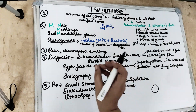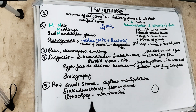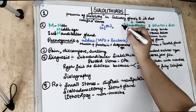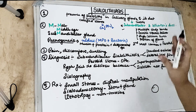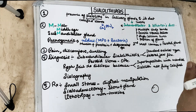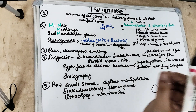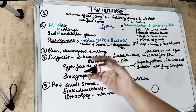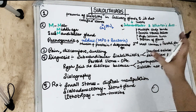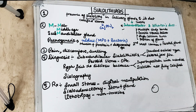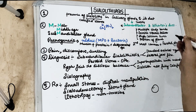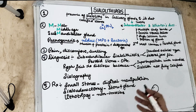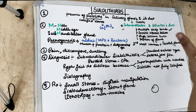The sialolith is going to obstruct the salivary gland or its duct. It mostly blocks or obstructs the submandibular salivary gland and its duct, which is Wharton's duct — this is the most common site. Now you may ask why only the submandibular gland and Wharton's duct. It is because there are multiple sharp bends or curvatures that trap mucin plugs and debris, and this debris and mucin plugs will form the nidus, which then forms the sialolith.